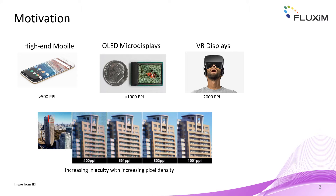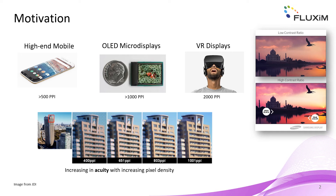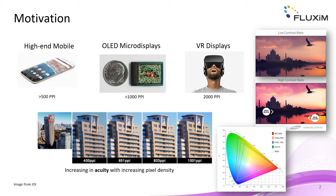Today's smartphones, TVs, and other daily life applications are already dominated by OLED displays. Those displays are also attractive for newer devices such as micro displays or VR applications. For these high resolution applications, the pixels and distance between them need to shrink in size. Ideally this will lead to increased acuity of the picture. However, if the pixel density is increased, a phenomenon called crosstalk can occur more frequently.